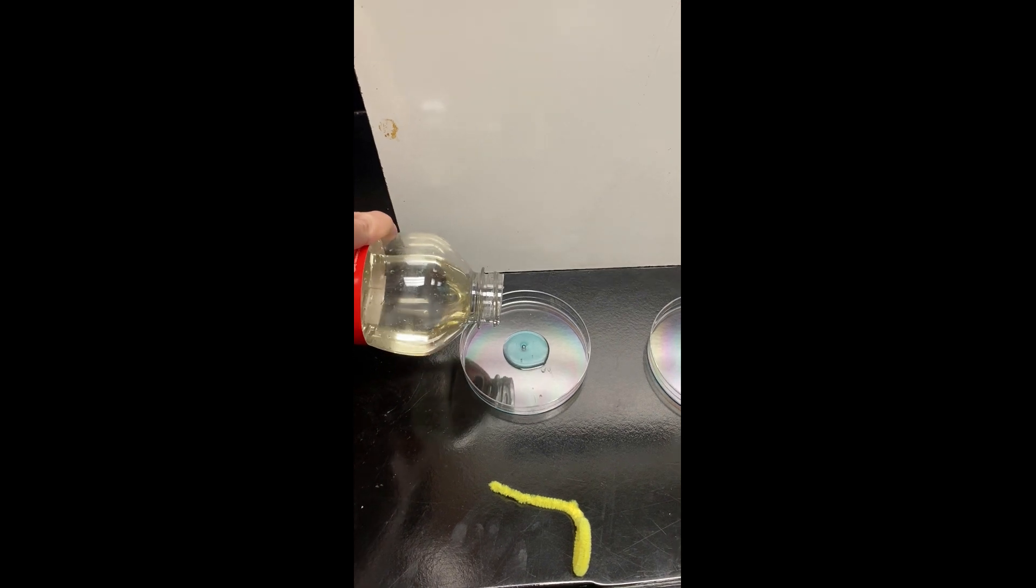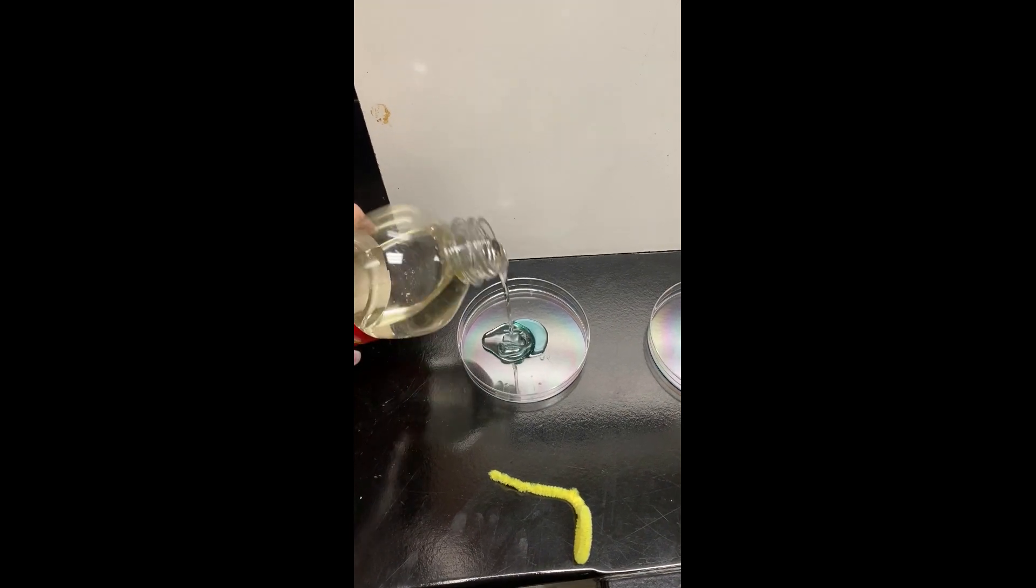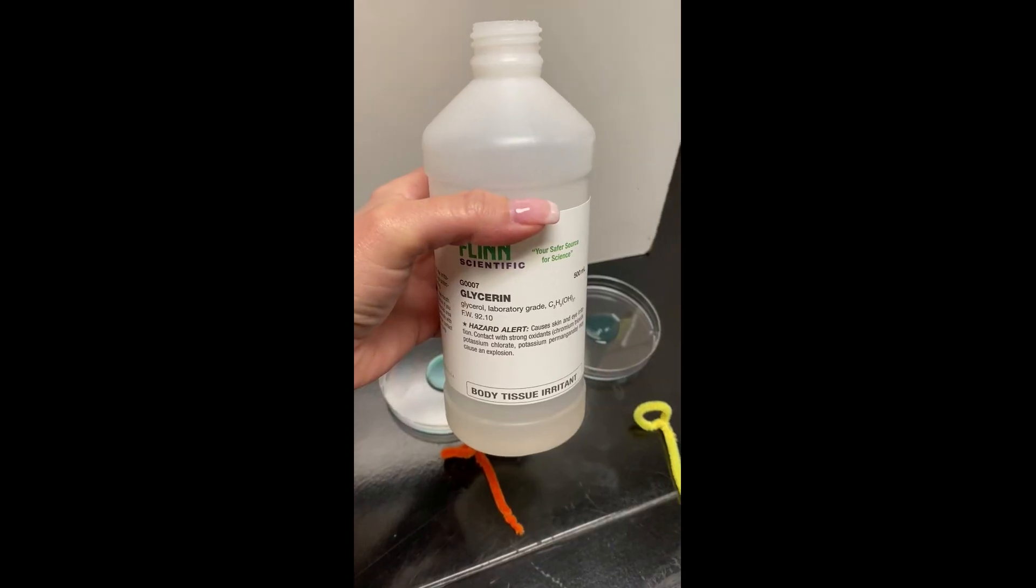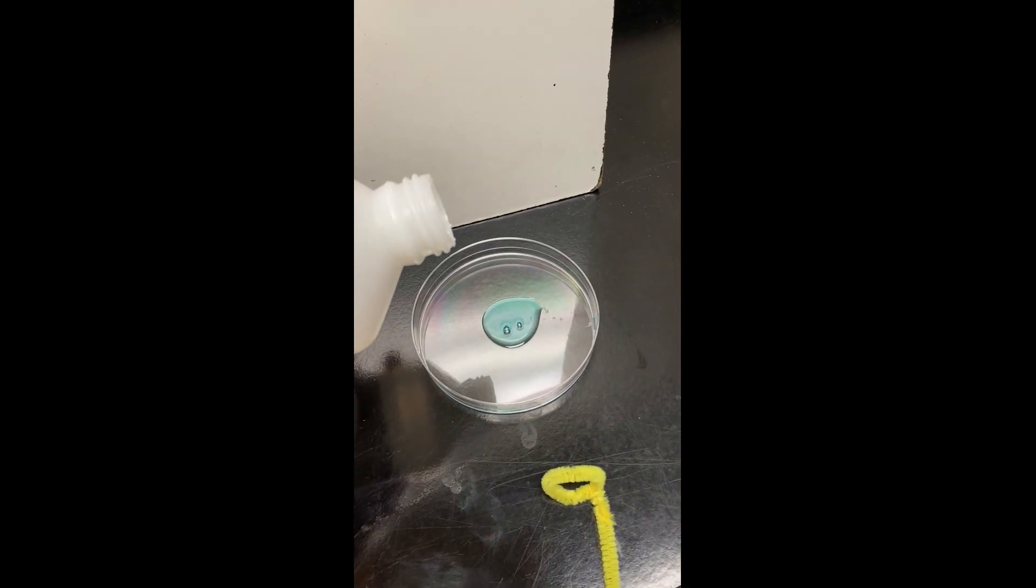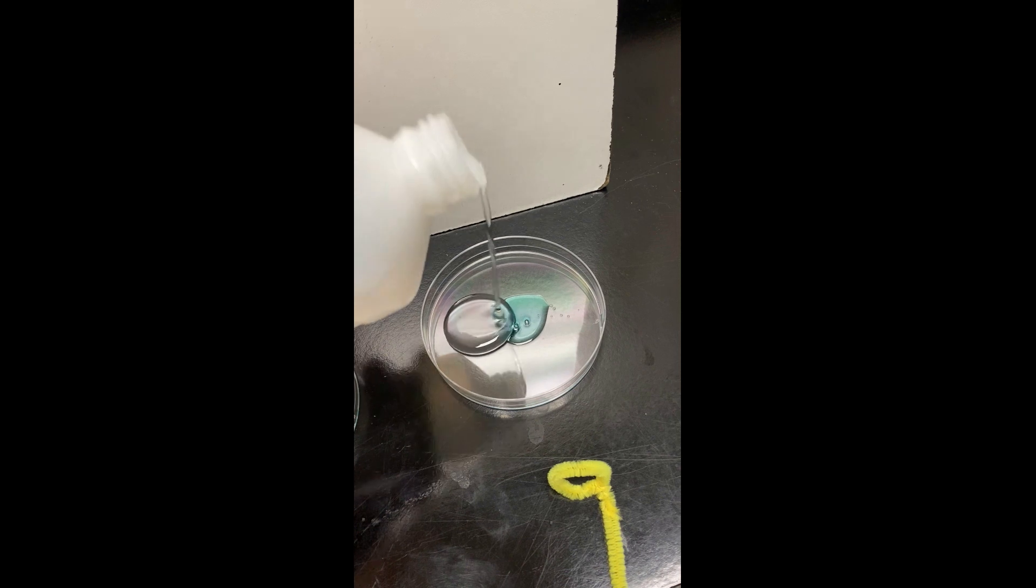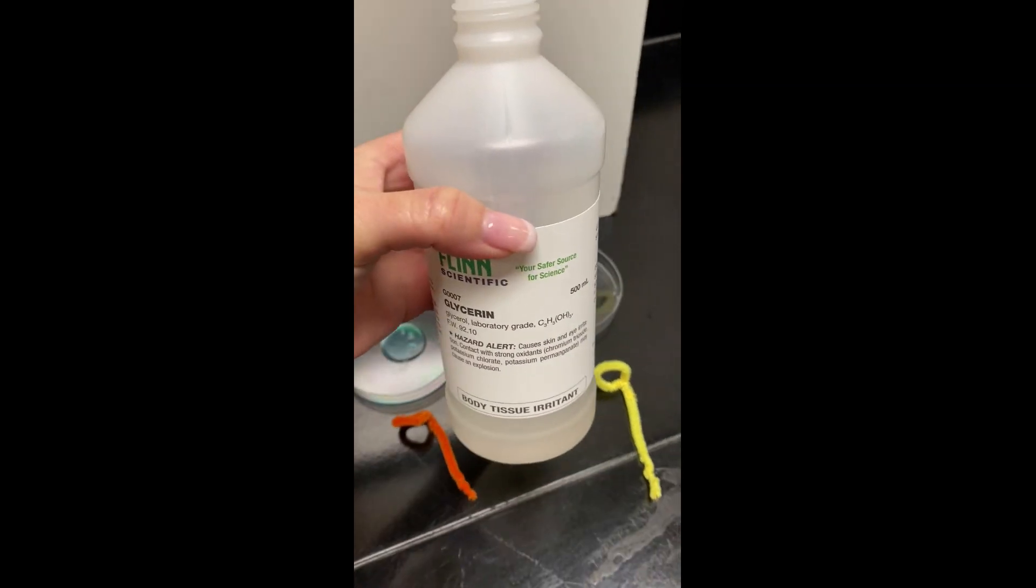We're going to add a little bit of corn syrup to our pastry dish on the left, a little dollop, and then a little dollop of glycerin on our pastry dish on the right. The one in the middle will only have Dawn Liquid Soap.